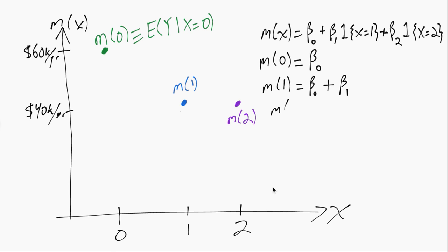Similarly, if we plug in x equals 2, again we always get that beta 0. Now we do not get the indicator that x equals 1 because x does not equal 1, x is 2, so that middle term will be 0. But we'll pick up that last term because that last indicator function will be equal to 1.